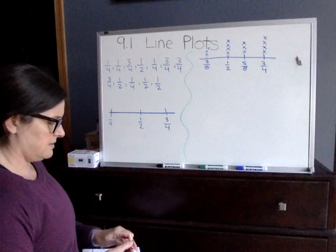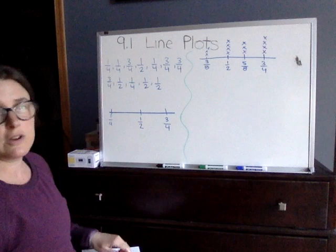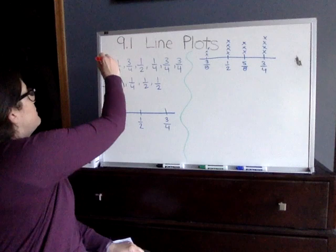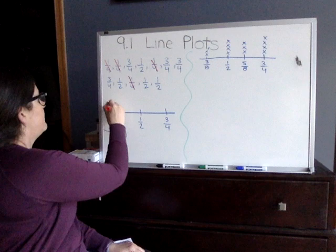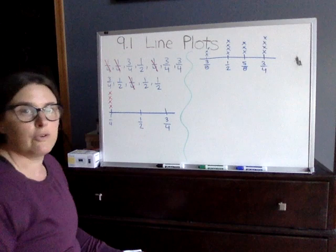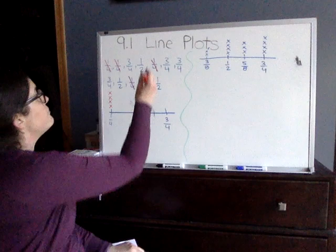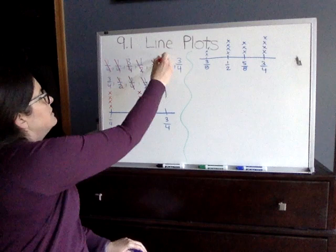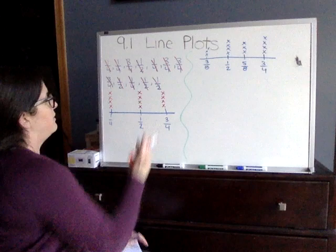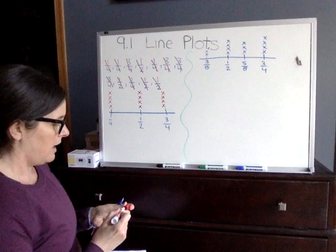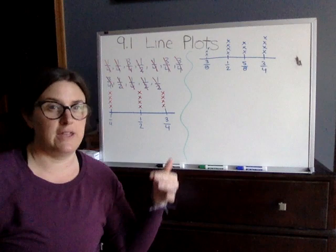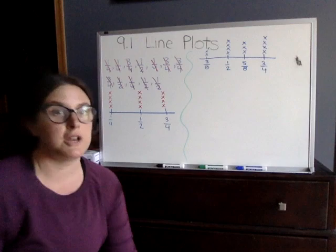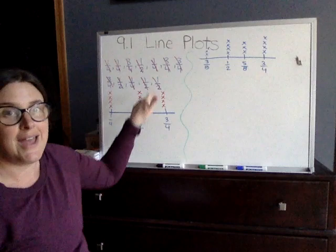Your first number is one fourth. Go through and count how many one fourths you have — there are four — so four X's go above the one fourth on the line plot. Next is one half; we have four of those as well. And for three fourths, we also have four. That uses up all of the numbers from the problem, so they're all on the line plot. When you do your examples, I'll give you the line plot with the X's already on it, but sometimes you will be given problems where you have to place the fractions yourself.